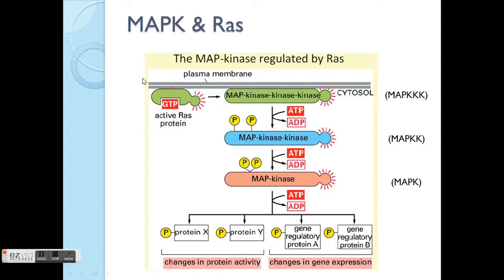MAPK is a very important pathway. The full name is mitogen-activated protein kinase. There is a main protein called RAS. As you can see, there's GTP here, so you can predict that RAS acts like a GTPase — remember the switch in the cell.